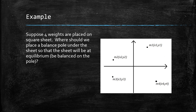That was a one-dimensional example. Let's talk about a two-dimensional example. Suppose you had four weights placed on a square — let's say a cookie sheet — and we're wondering where we should place a balanced pole underneath the sheet so that the sheet will be at equilibrium and balanced on the pole.